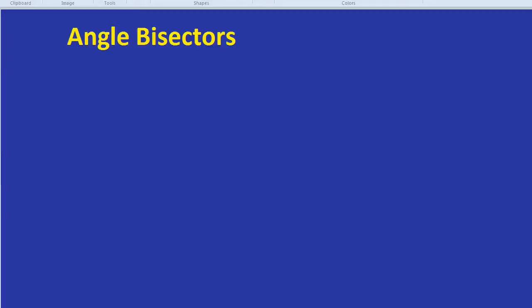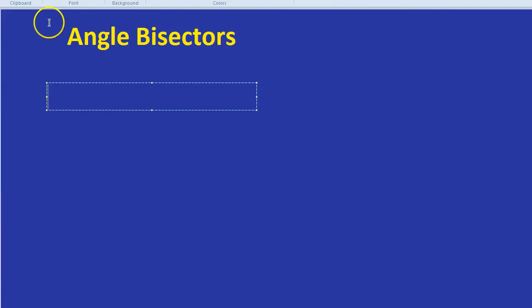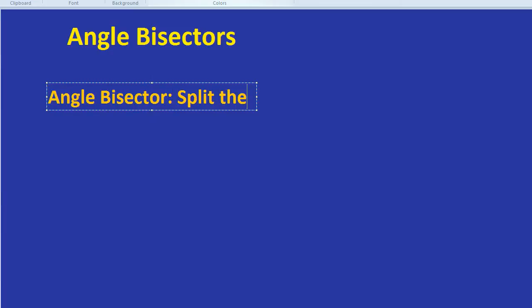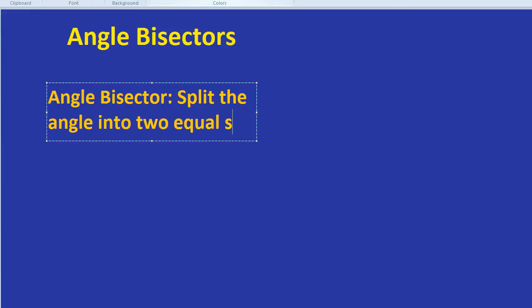In this video, I'm going to show you how to do an angle bisector. First, what does the word actually mean? Well, 'bi' means two, and 'sector' is like sections. So what we would expect an angle bisector to do is split the angle into two equal sections.